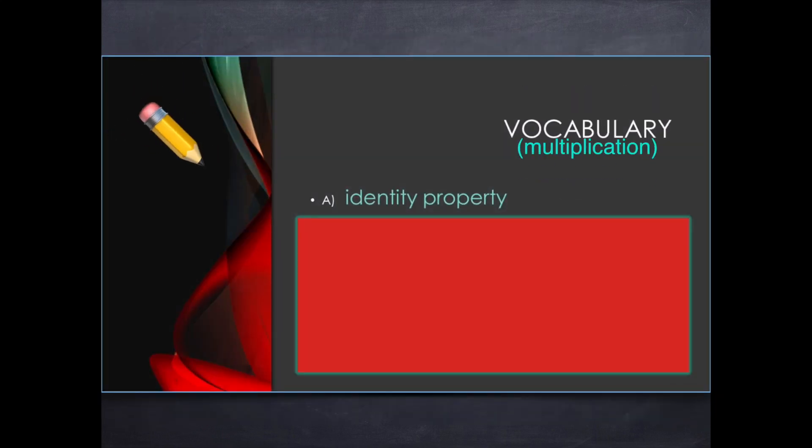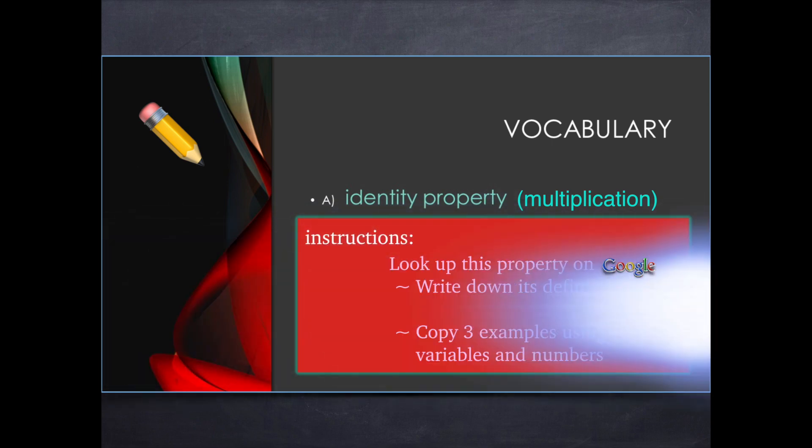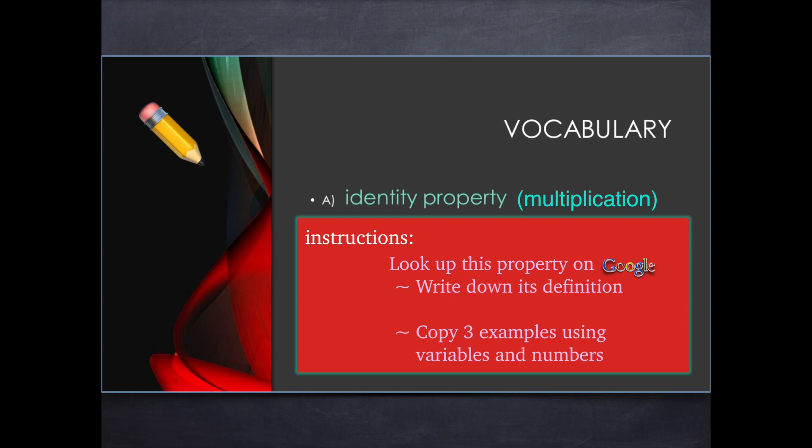The first one you're gonna do is the identity property of multiplication. Let's look up identity property of multiplication on Google or Bing, and write down its definition, and then find some examples of exactly what it looks like using numbers and variables, and get that in your notes.